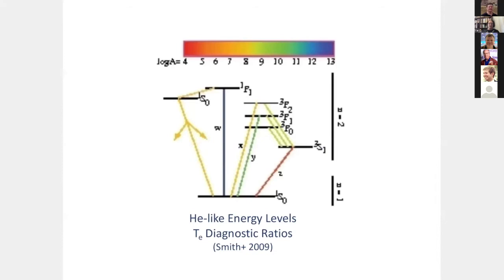The helium-like diagnostics work for temperature because of the dependence of the temperature ratio — the ratio of the X plus Y plus Z lines over the W line — where the strong resonance line W has a different dependence of the collisional excitation rate as a function of energy and temperature. For electron density diagnosis, which is how we determined with Chandra and XMM that densities are actually high, the triplet S level is metastable and builds up population at low densities, but at high enough density it collisionally excites up to the triplet P levels, transferring population upward and changing the line ratio of X plus Y over Z.